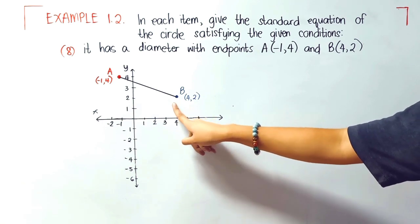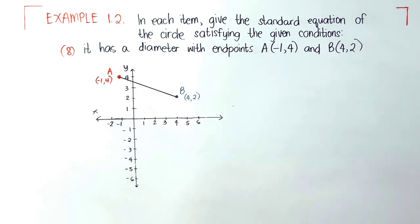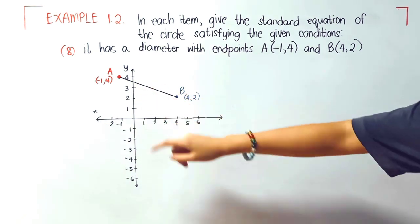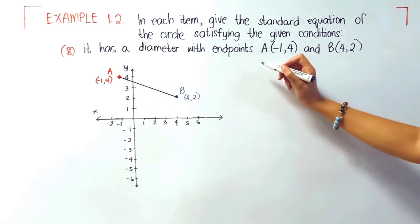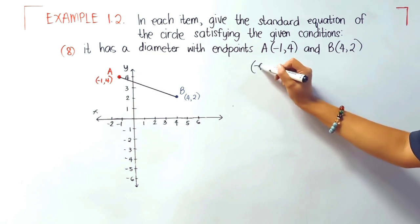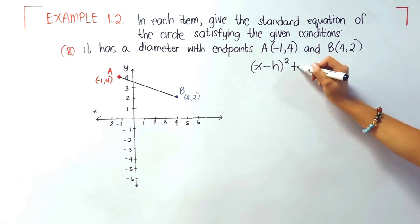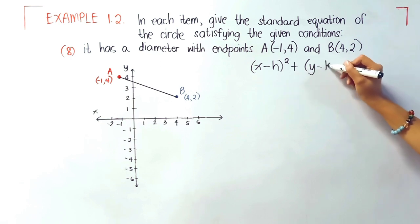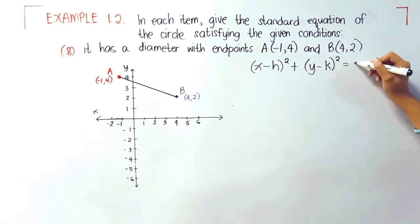These are the two endpoints of our circle, and in the middle portion here we will be getting our center. Since our center is not in the origin, we'll still be using (x - h)² + (y - k)² = r².